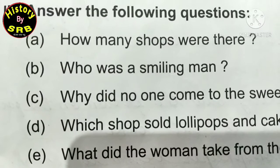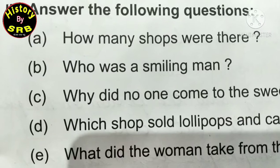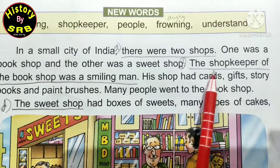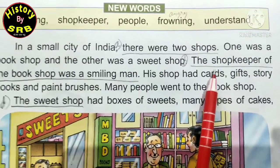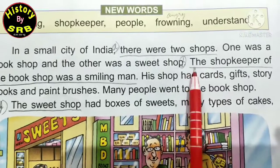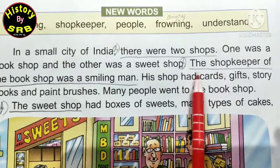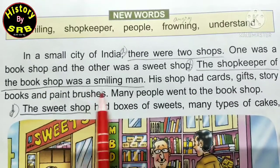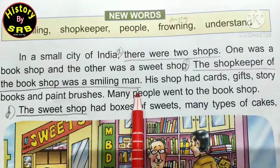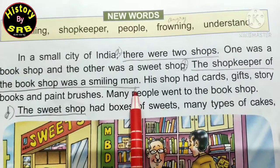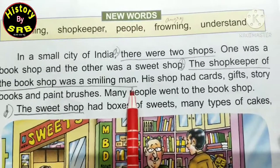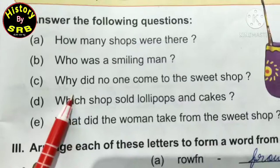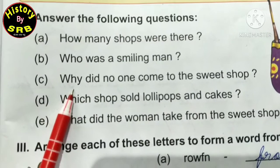Question B: 'Who was a smiling man?' - yaani smiling man kaun tha? Answer yahan se likhna hai: 'The shopkeeper of the book shop was a smiling man.' Yeh big answer ho gaya.